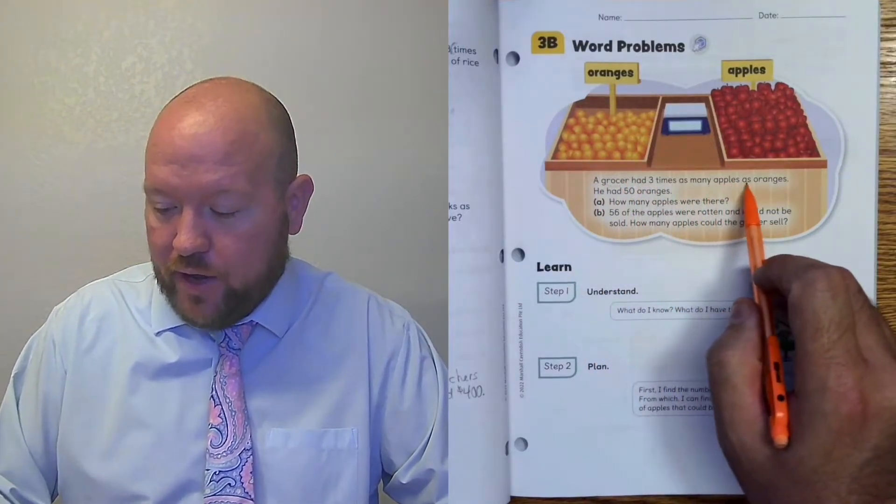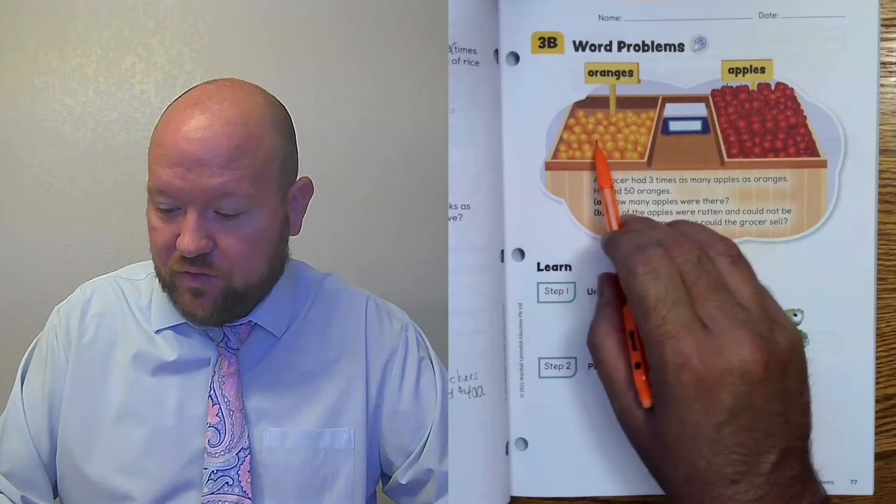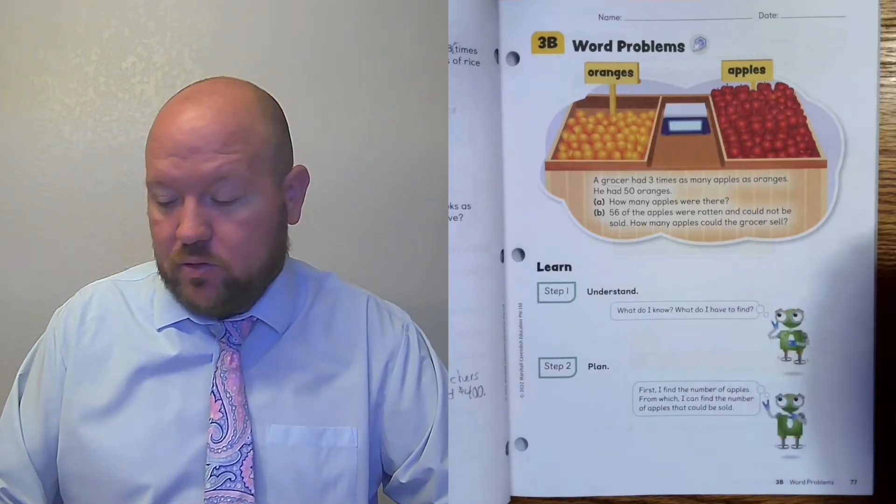So a grocer — a grocer is just someone who sells groceries — a grocer has three times as many red apples as oranges. He has 50 oranges, so that'd be important. Three times as many, so how many apples were there? We'll have to figure out how many apples there were. 56 of the apples were rotten and could not be sold. How many apples could the grocer sell? So we have to figure out how many apples there are, and then how many apples will he or she be able to sell.